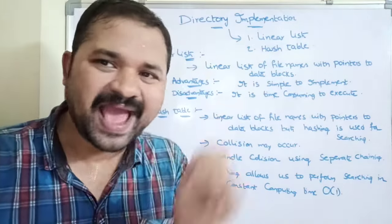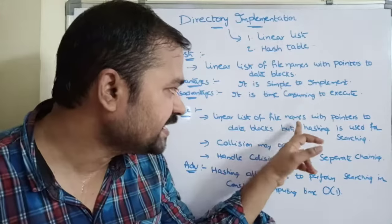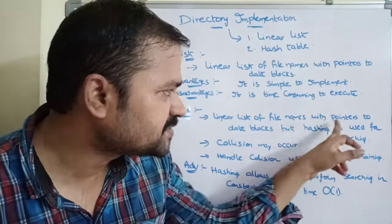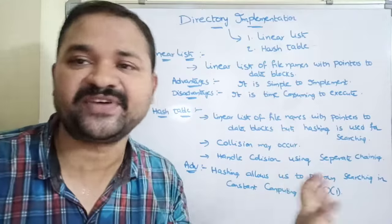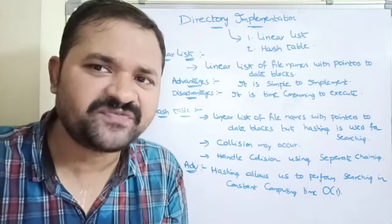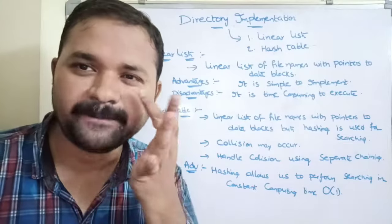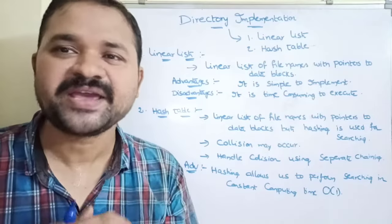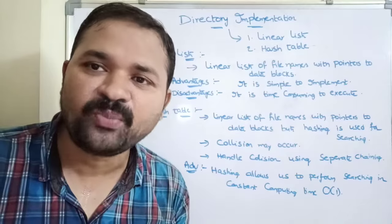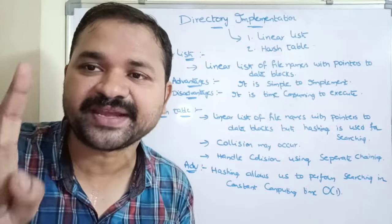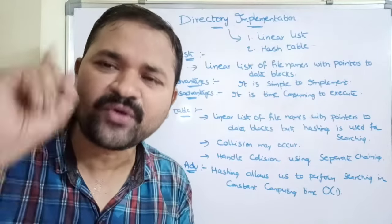We can overcome this problem with the second approach: hash table. In the hash table approach, we also maintain a linear list of file names with pointers to the data blocks, but hashing is used for searching. Instead of using linear search, we use hashing technique. The major advantage of hashing is that we can perform the searching operation in constant computing time.